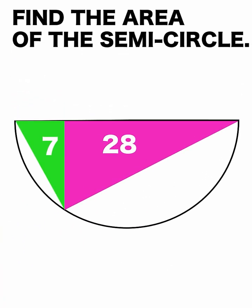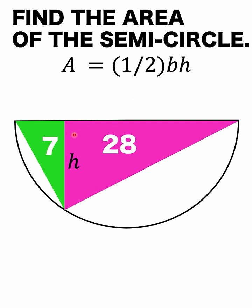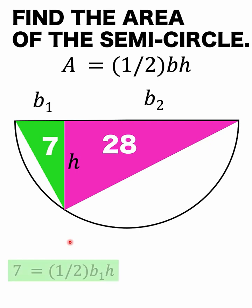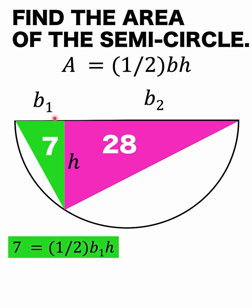Let's begin by recalling the formula for the area of a triangle: area is equal to one half times the base times the height. In these triangles we would like to identify the base and the height. Let h be the common height, b sub one be the base of the green triangle, and b sub two be the base of the pink right triangle. Substituting these into the area formula: for the green triangle the area is 7 = (1/2) · b₁ · h, and similarly for the pink right triangle.